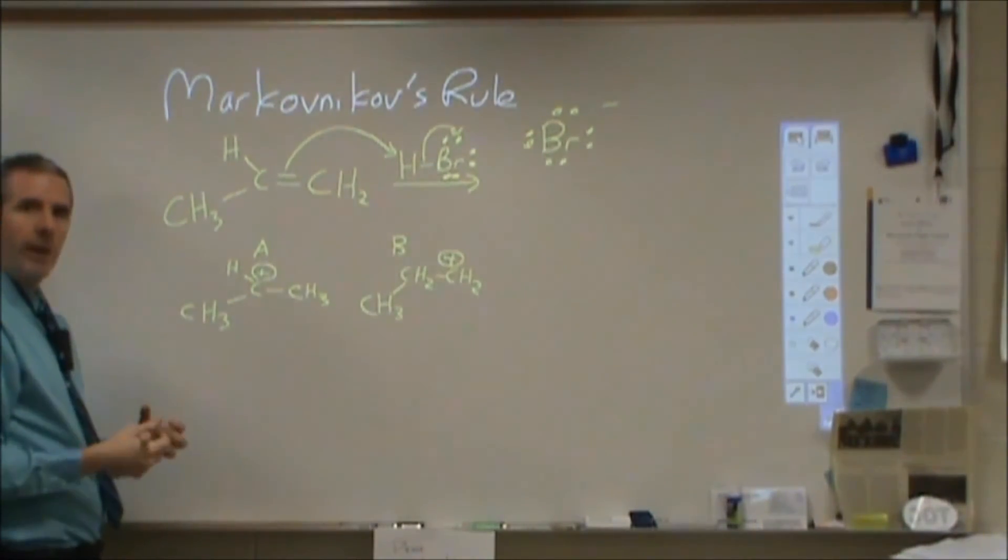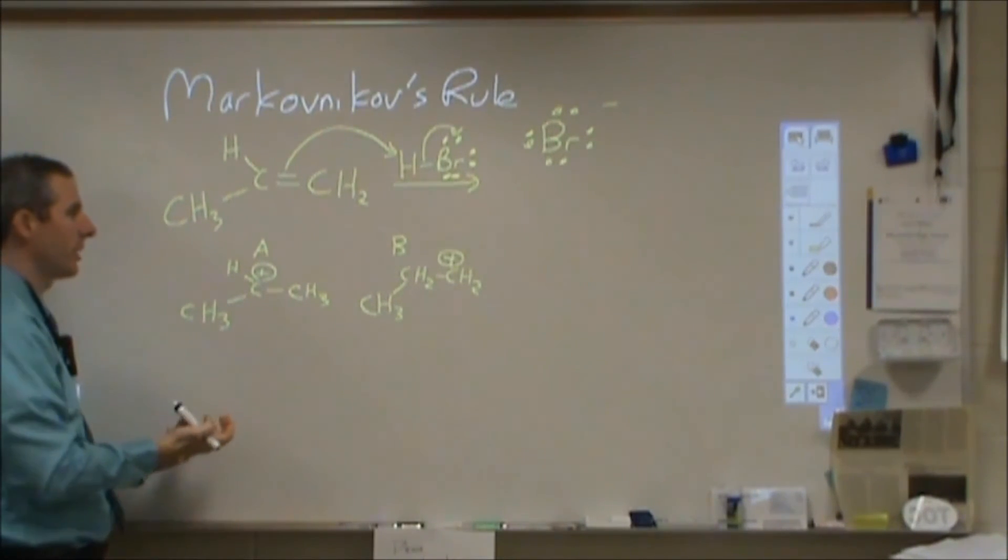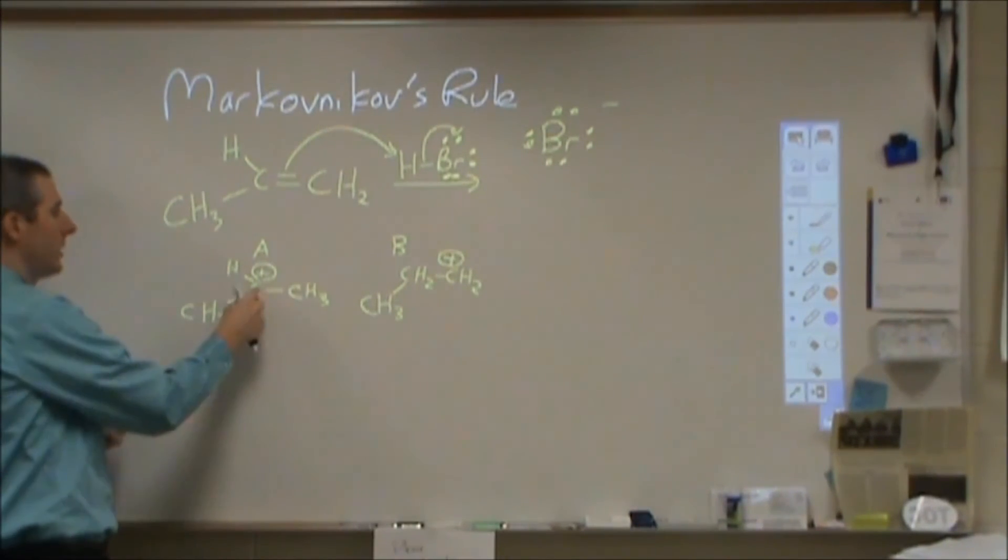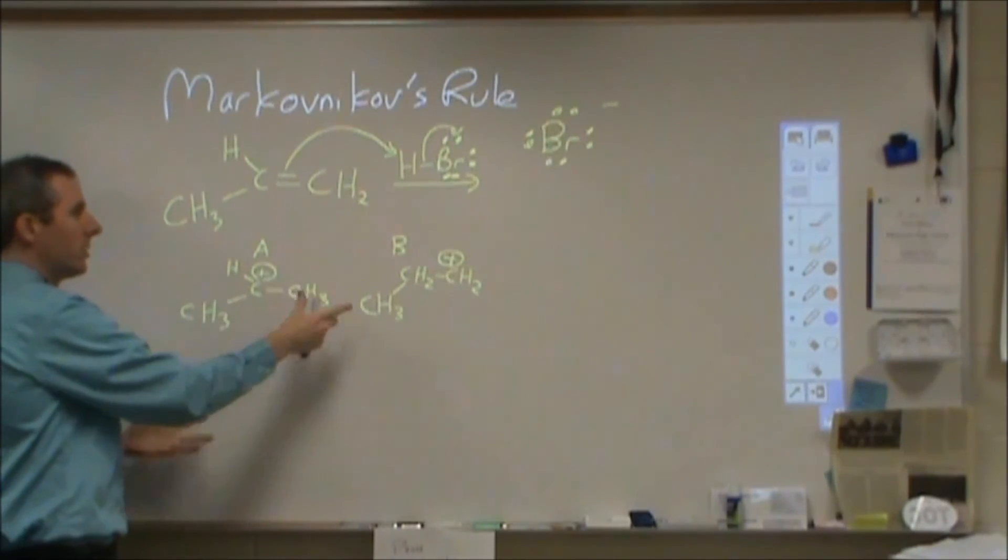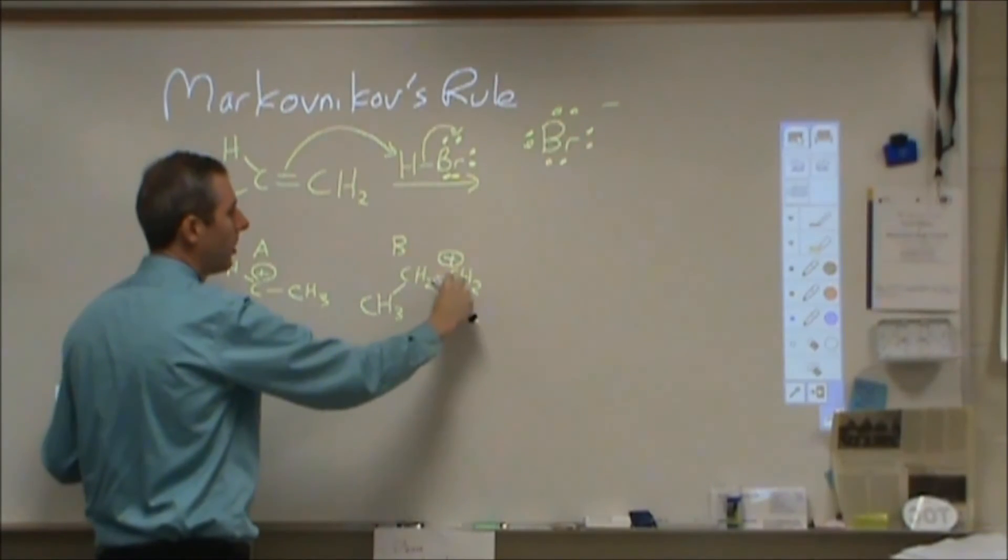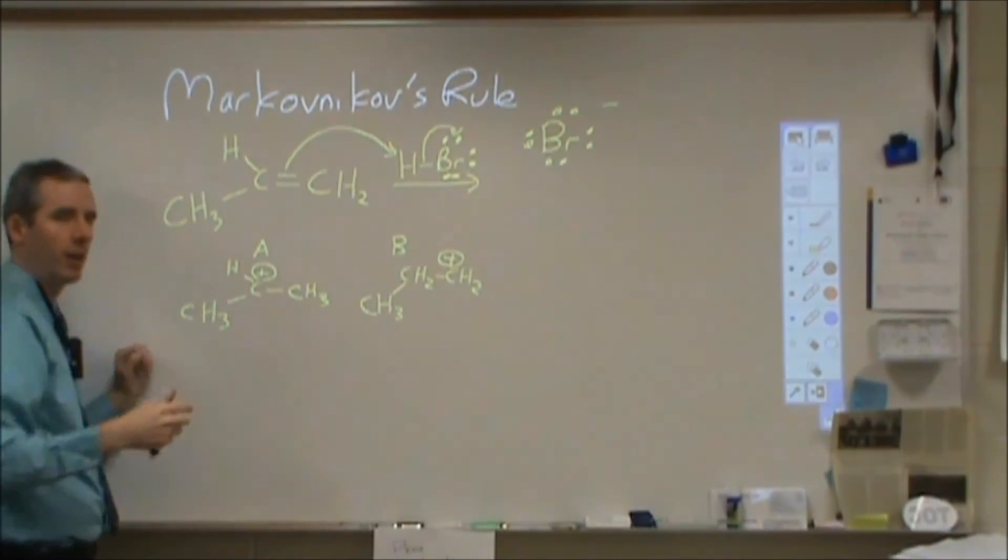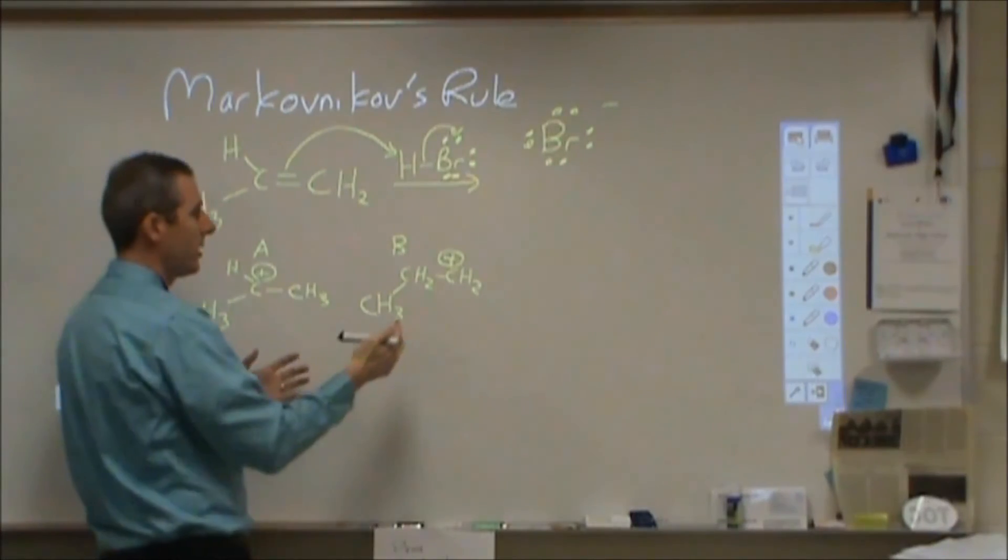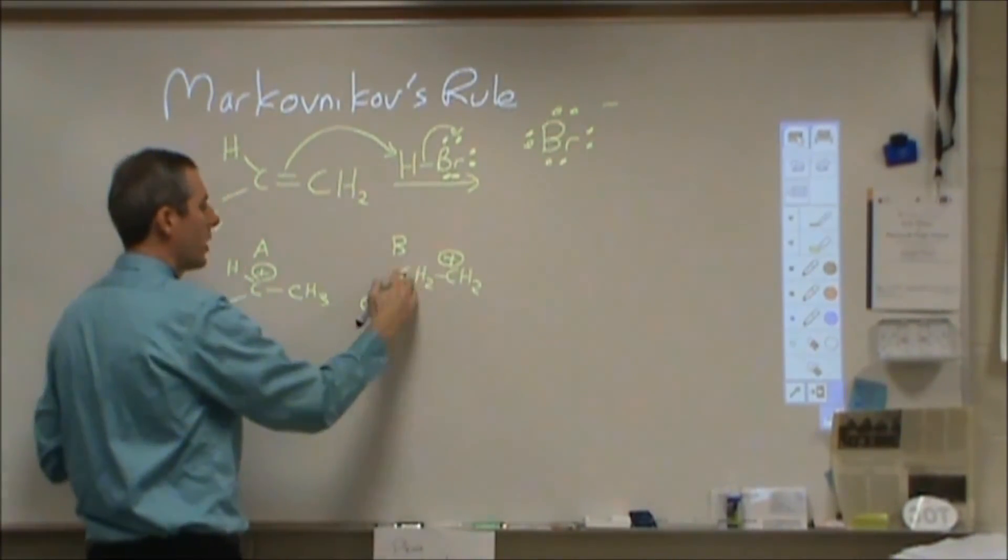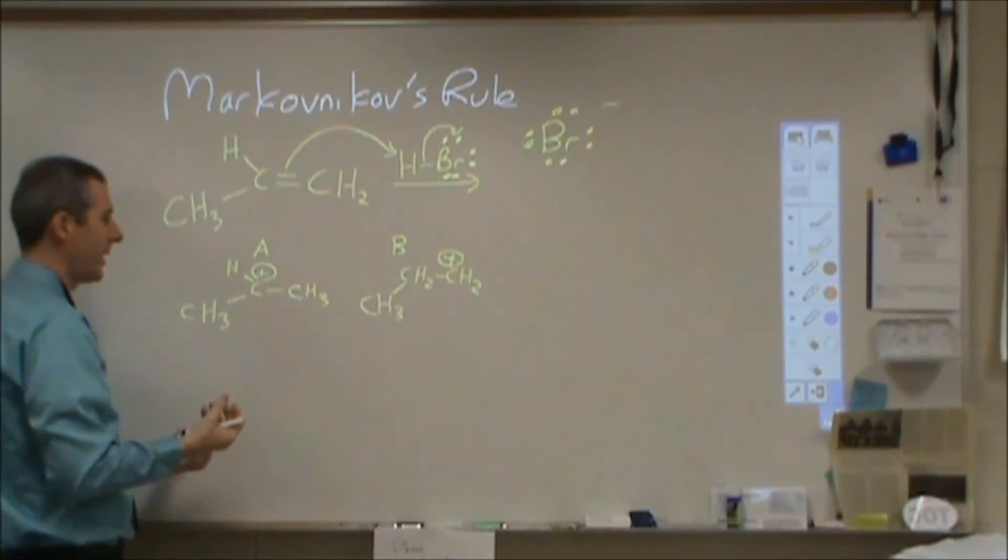A carbocation is unstable—it's a carbon missing electron density. Carbon has decent electronegativity, so this is a problem. It won't last very long. Anything that can donate electron density will interact with it. These options differ in stability because this carbon can only pull electron density from the adjacent carbon. Hydrogens have so little electron density to begin with. So we have something unstable without much help to stabilize it.